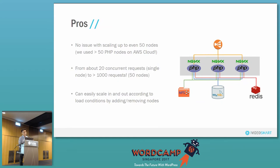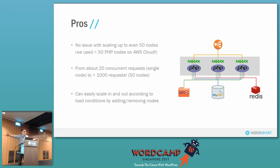The pros: we have been using this for the past one year plus with no issues at all. We scaled up to 50 nodes — there was one time when we scaled up to 50 nodes running on a single database server — and we were able to take 1,000 concurrent requests. From 20 concurrent requests, we increased it to 1,000 concurrent requests. What I want to share is that the database is still thrashing at this point, but because we managed to scale out the PHP nodes, each PHP node is able to take the load and wait. At least the PHP doesn't thrash.